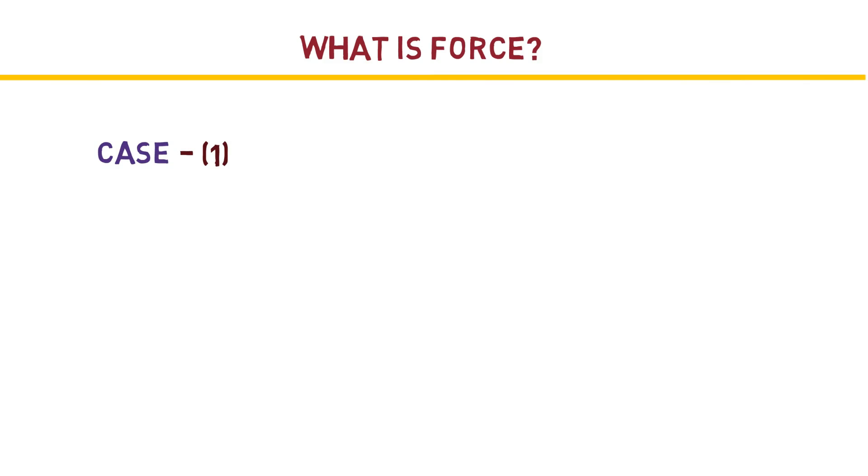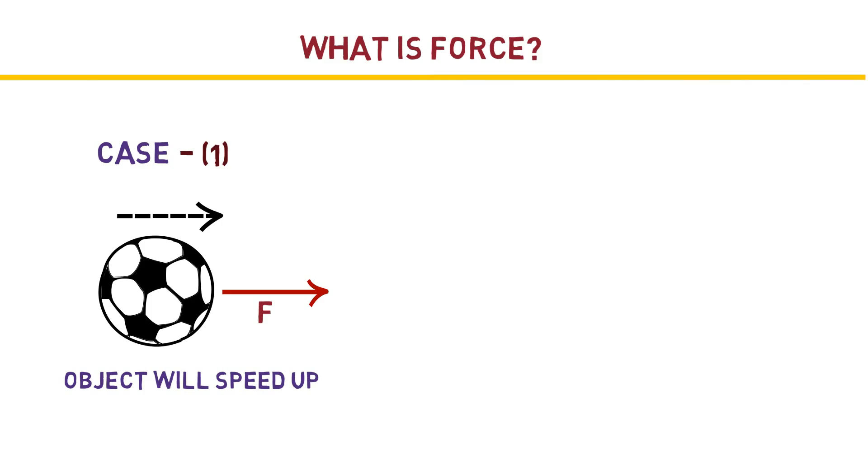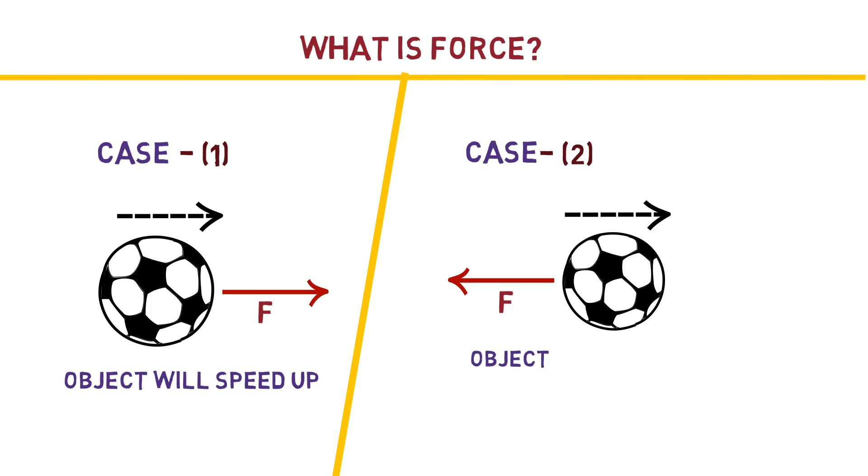Have a look at three different cases for force. Suppose an object is moving to the left and we apply a force in the same direction, in this case the object will speed up. If we apply force in the opposite direction to the velocity of the object, the object will slow down.